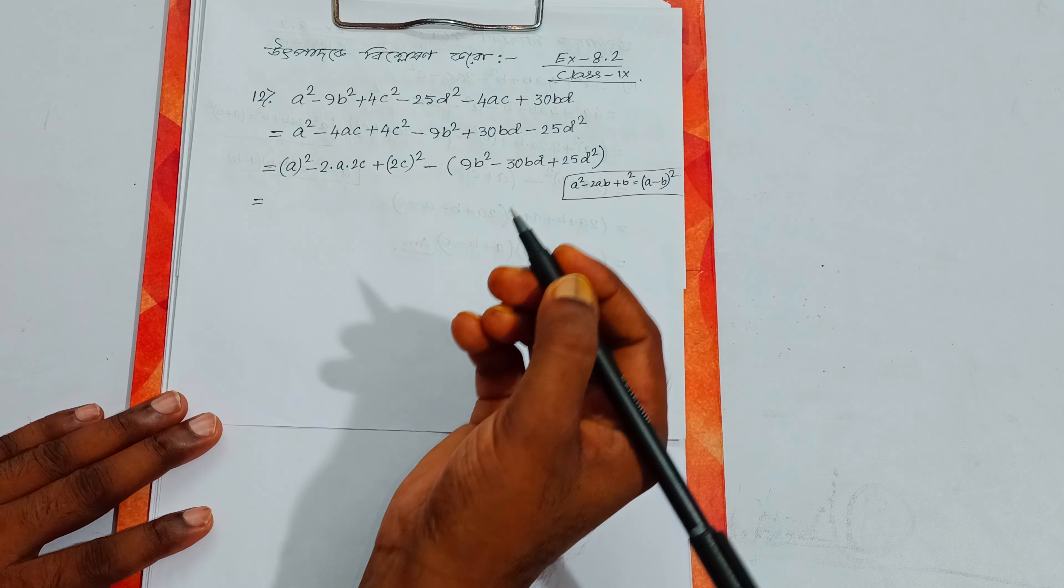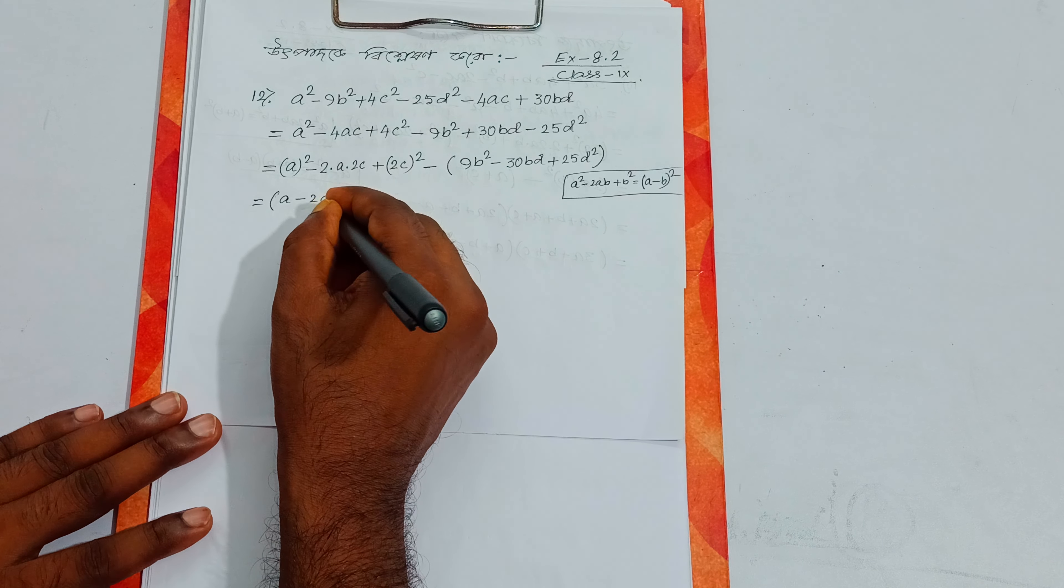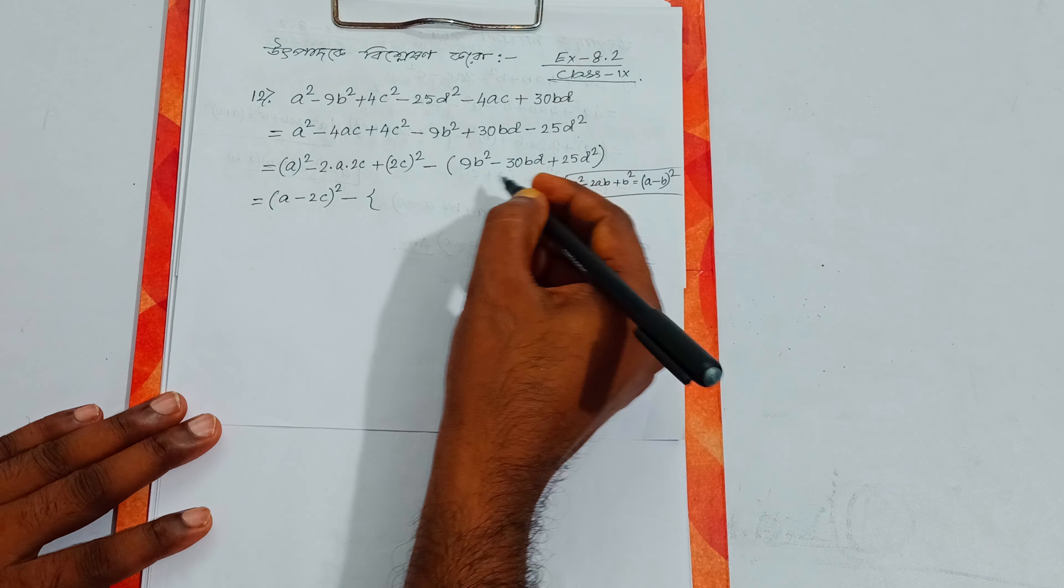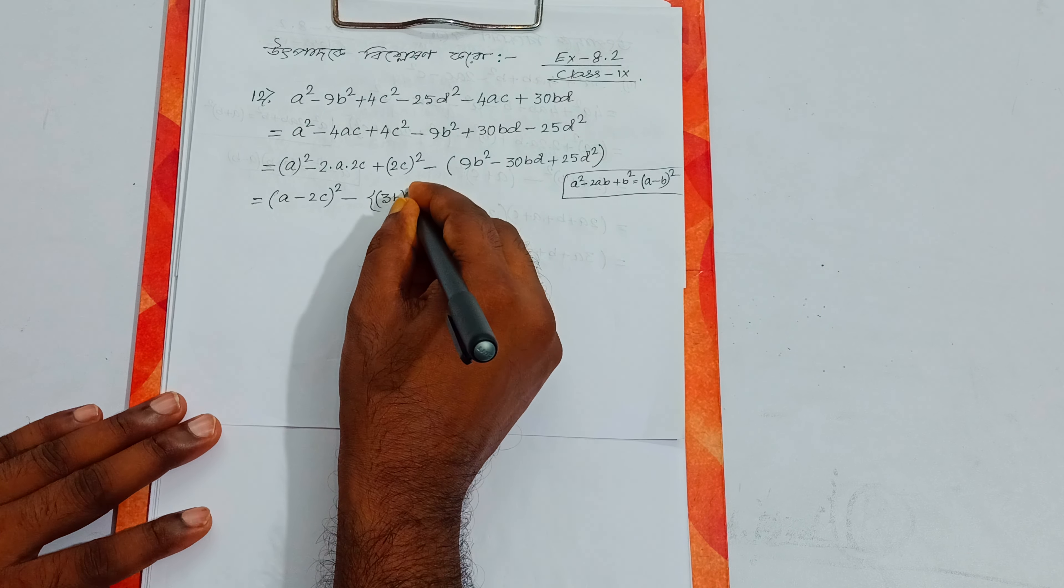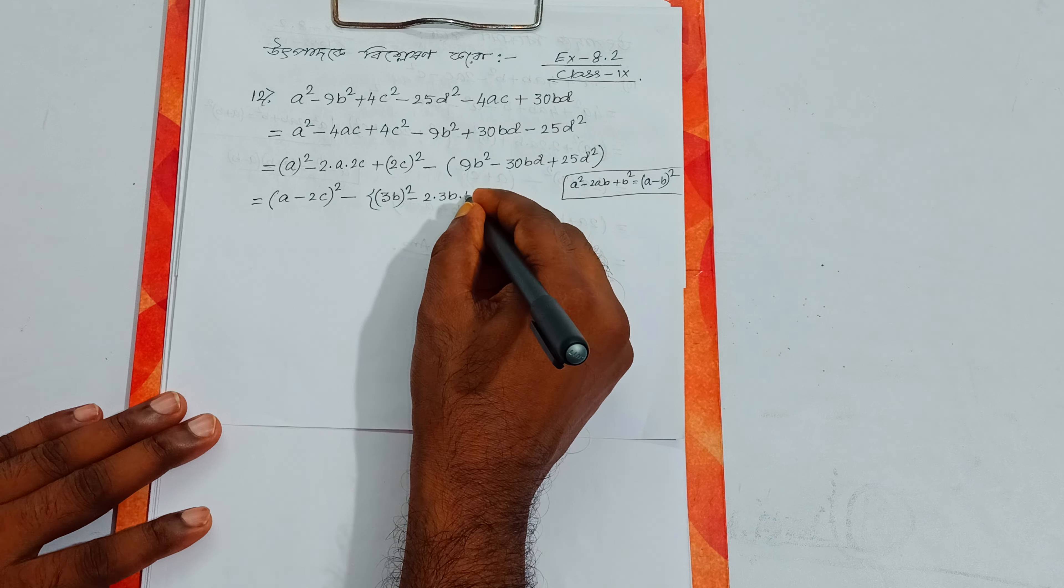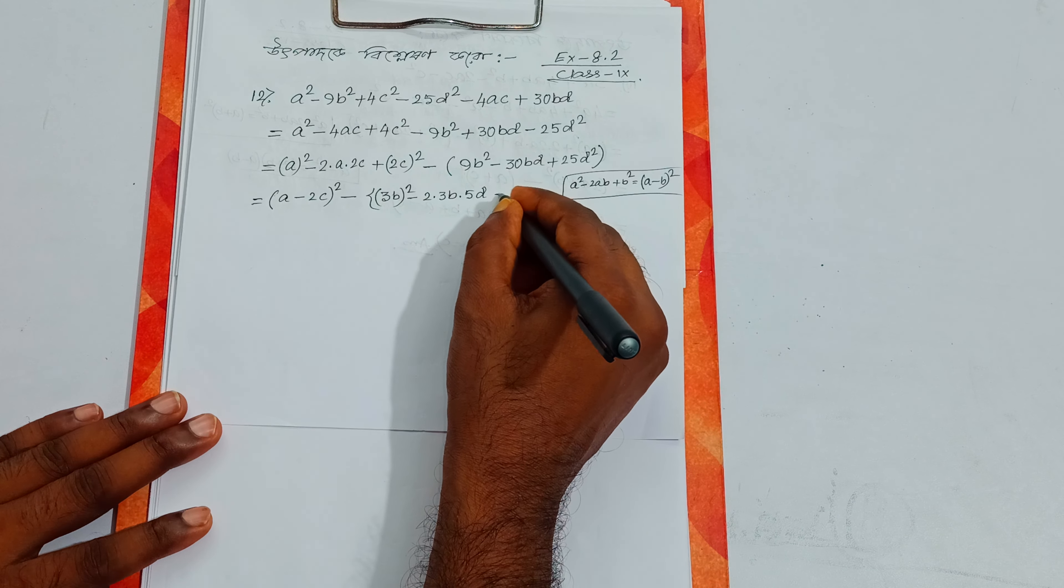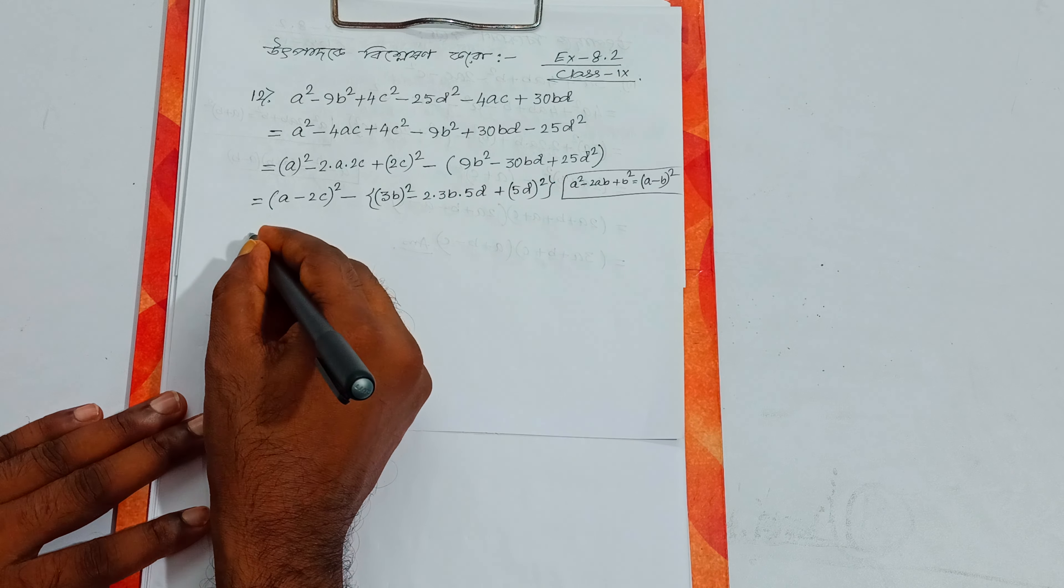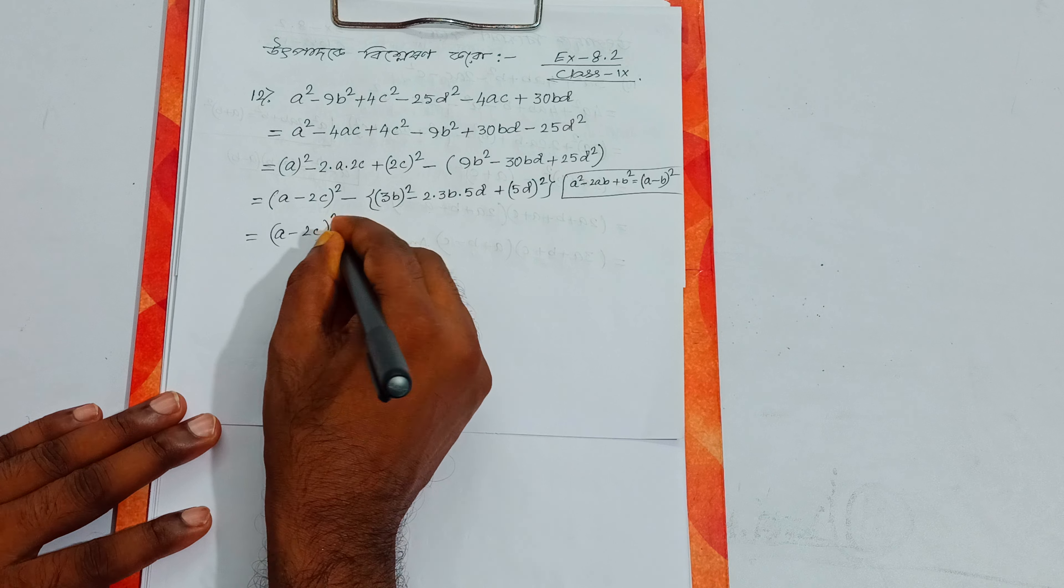This is a² minus 2ab plus b² which gives us (a minus b) whole square. For 9d square we can write 3b whole square minus 2 into 3b into 5d plus 5d whole square, so this becomes (a minus 2c) whole square.